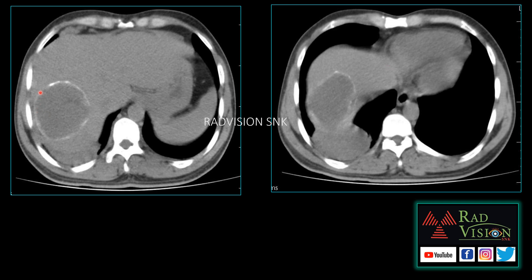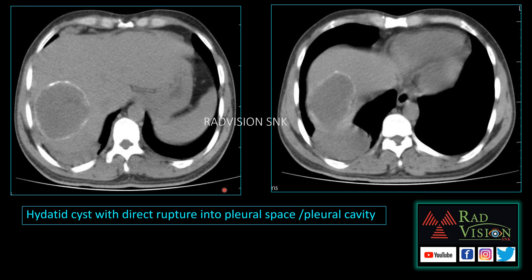On CT axial sections, you can clearly see this is the hydatid cyst, and there is a breach in the wall of the hydatid cyst with expulsion of the contents into the pleural space. This is a case of hydatid cyst with direct rupture into the pleural cavity. The most common location is the right lobe of the liver adjacent to the bare area, where the peritoneal covering is defective, so the hydatid cyst easily ruptures into the pleural cavity.